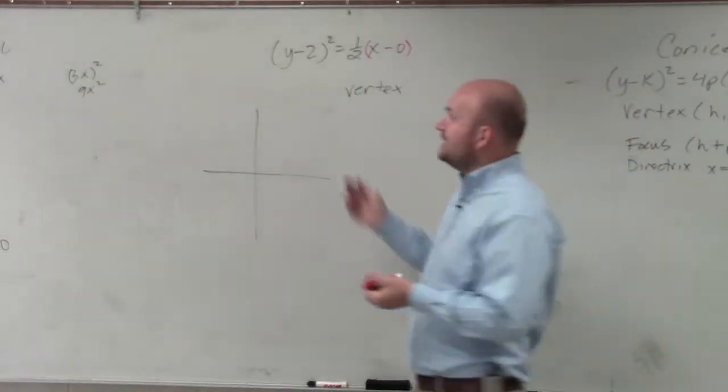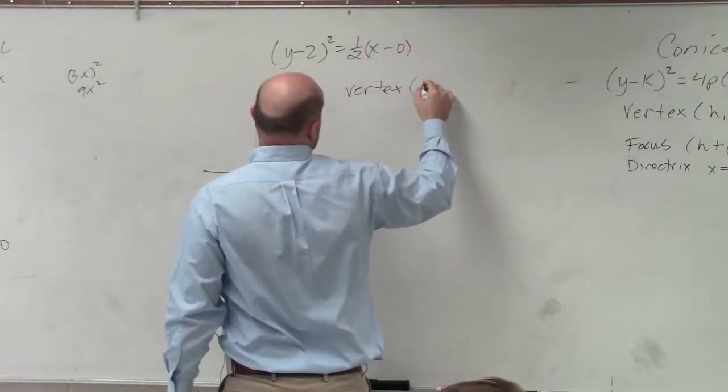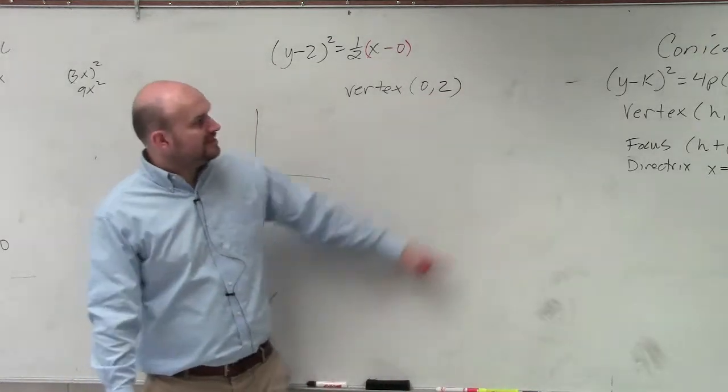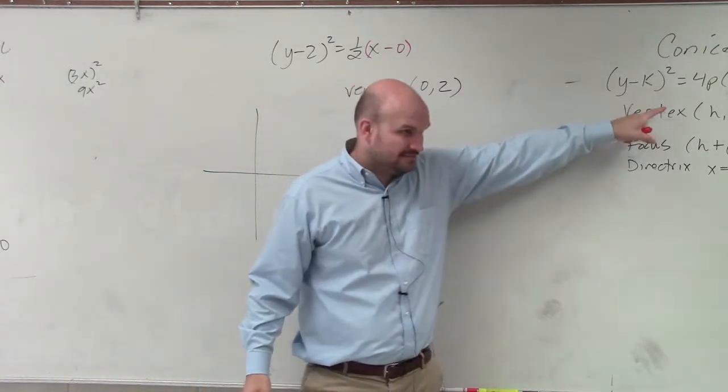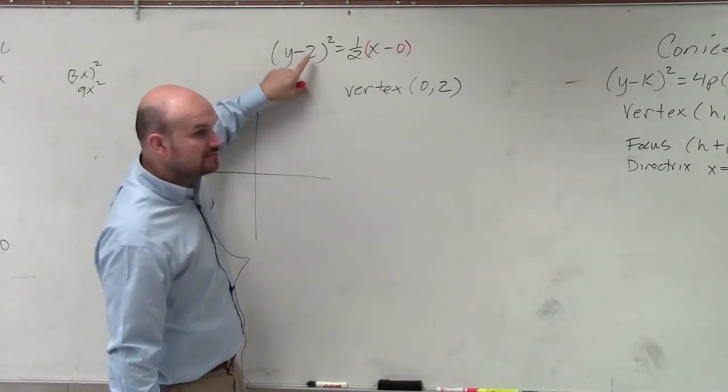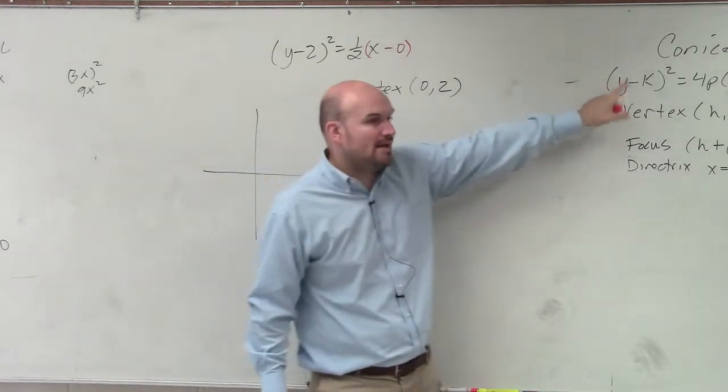So I could say my h is 0, and my k is going to be 2. OK? Nope, because it's y minus k. So y minus 2 means k is 2, not minus 2. The formula is y minus k, right?